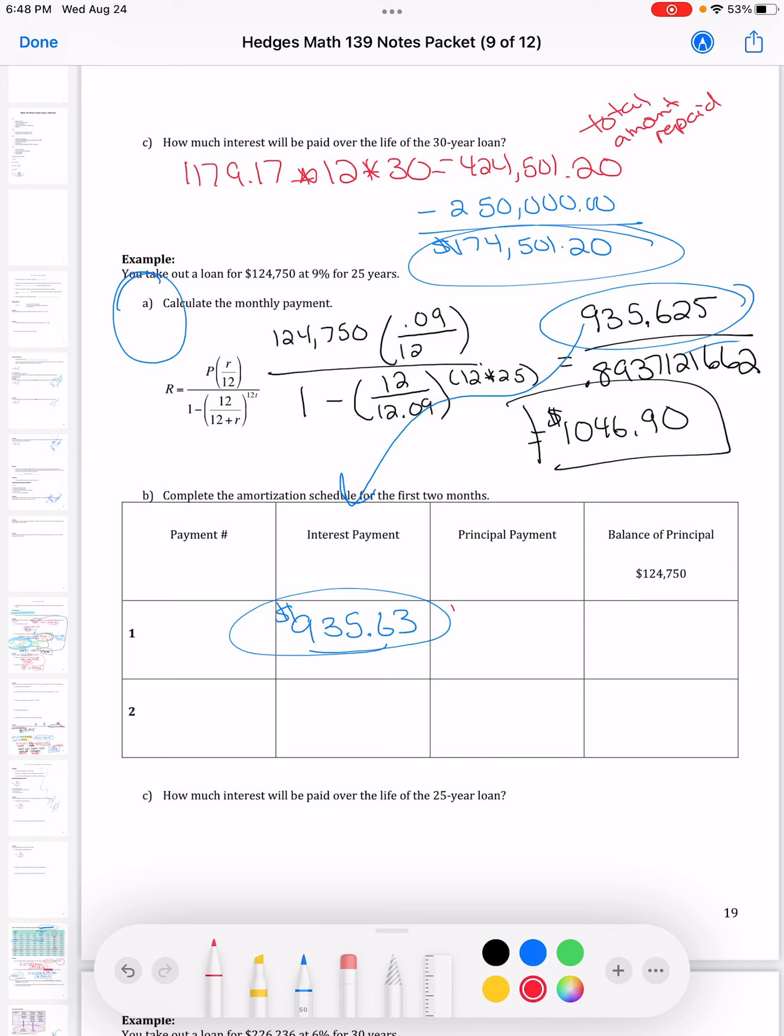The principal payment is what I paid my monthly payment minus how much the bank took for their own profit. The balance of the principal is what I owed at the beginning of this month minus how much just got applied to my loan. So it should be less, I should owe less money.